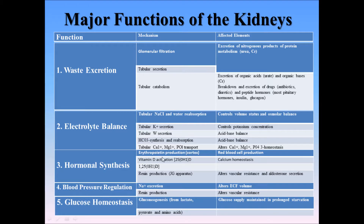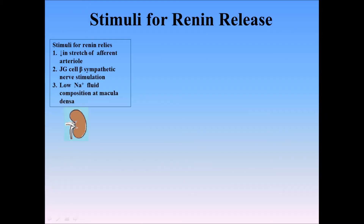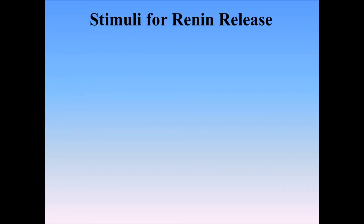Juxtaglomerular cells secrete renin, as well as activation of 25-hydroxy vitamin D into 1,25-dihydroxy vitamin D. Now let's talk about the causes of renin secretion in the next slide, which is very important in the maintenance of blood pressure via the renin-angiotensin system.